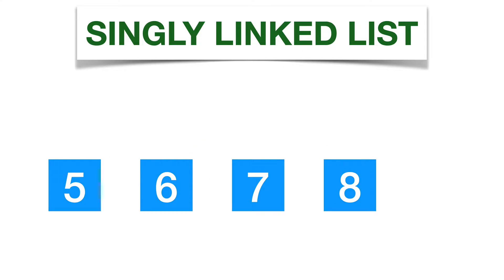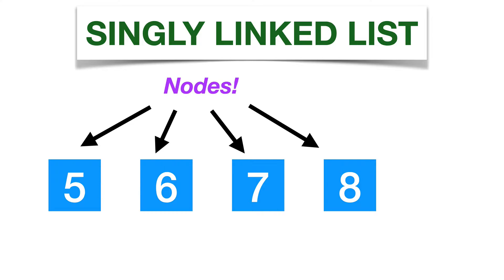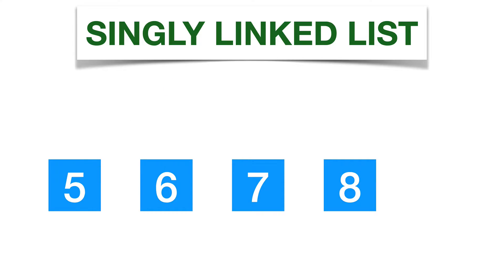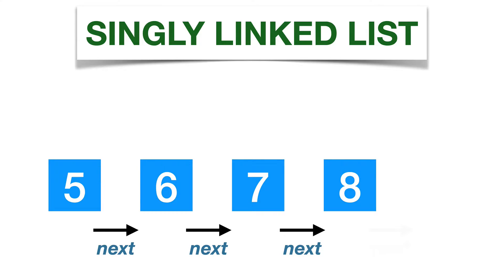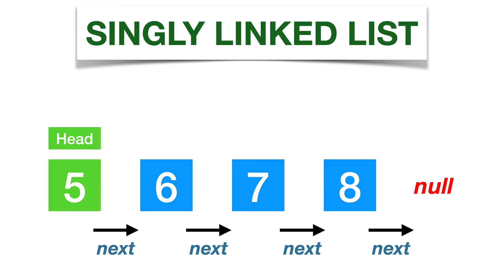Let's start out by defining what a singly linked list consists of. In a singly linked list, we have a series of nodes, each containing a particular value. So here we have a node with the value of 5, a node with the value of 6, a node with the value of 7, and a node with the value of 8. The way that all these nodes are linked up is through a next pointer. We can represent each of these nodes in code as an object with a particular value and a next property which points to the next node. When we get to the last node, that last node will point to a value of null. This is very important in a linked list because we need that value of null in order to identify the last node, which we can also refer to as the tail. The very first node in the linked list we can refer to as the head.